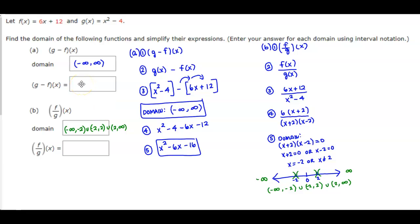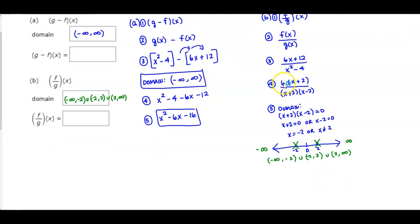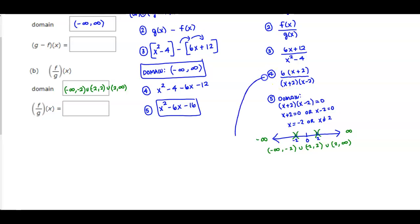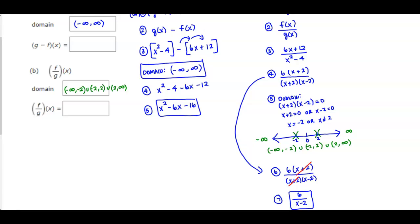Now we simplify to get our final result. We have 6(x + 2) over (x + 2)(x - 2). We can cancel the (x + 2) terms, so our simplified answer is 6 over (x - 2). There is our simplification, and there is the domain of that function.